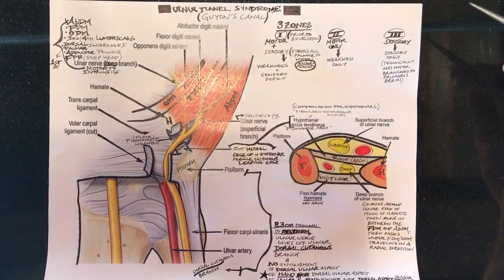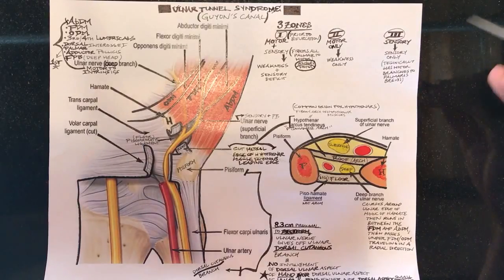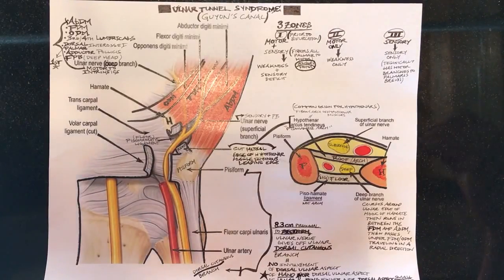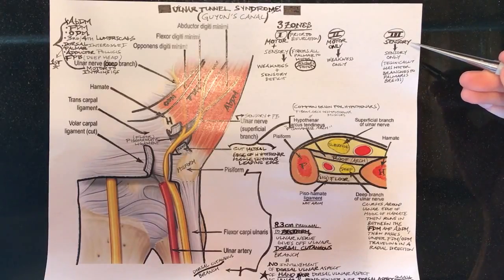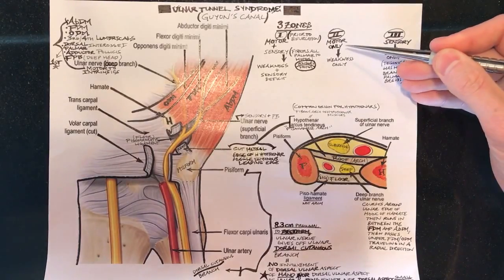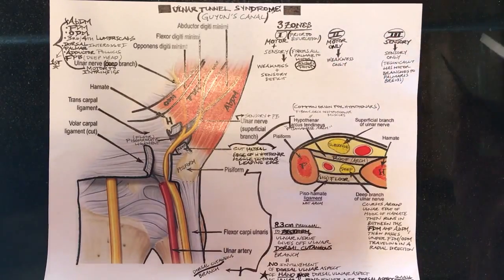And zone three is essentially the other side of the bifurcation which is here what's purely sensory. Again remember it has a branch to the palmaris brevis so it cannot be purely called sensory if you want to be technical but for learning purposes and making this easier to remember think about zone three is purely sensory, zone two is purely motor and zone one is ulnar nerve proper with motor and sensory mixed fibers.